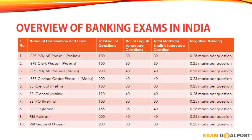However, in SBI PO prelims and mains, 30 and 35 questions are asked respectively. On the other hand, 40 questions of total 40 marks are asked in the RBI Assistant exams. In RBI Grade B Phase 1 exam, it comprises 30 questions.